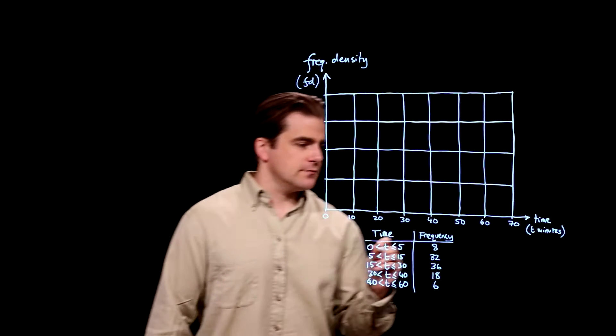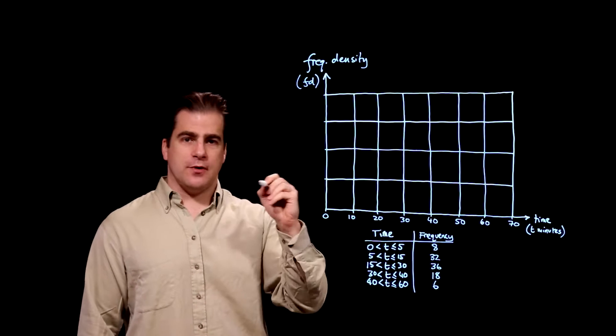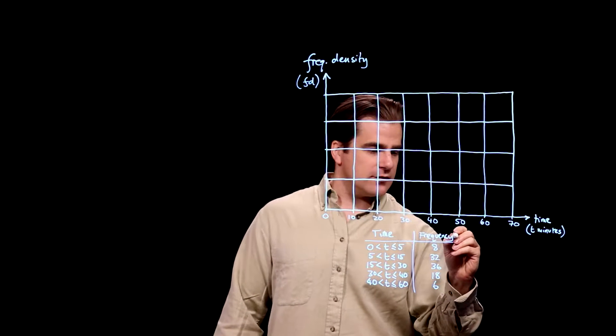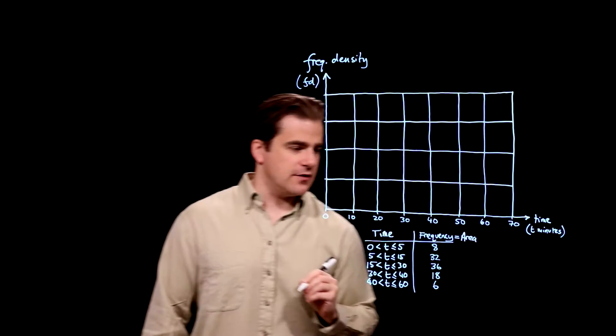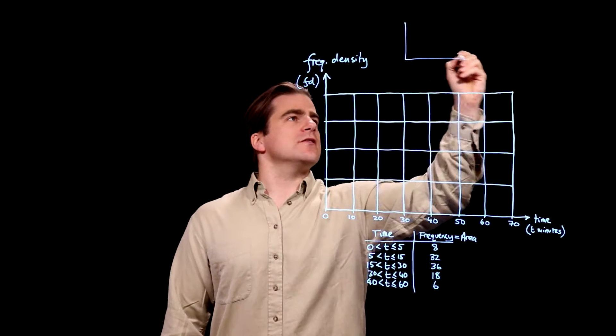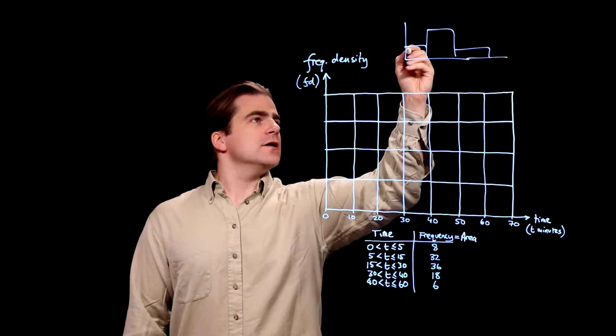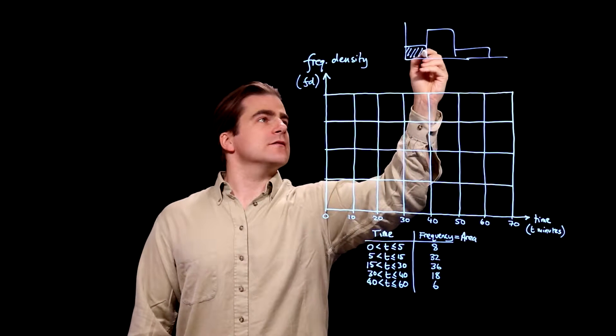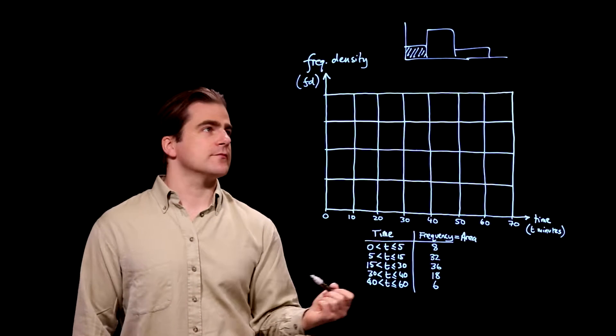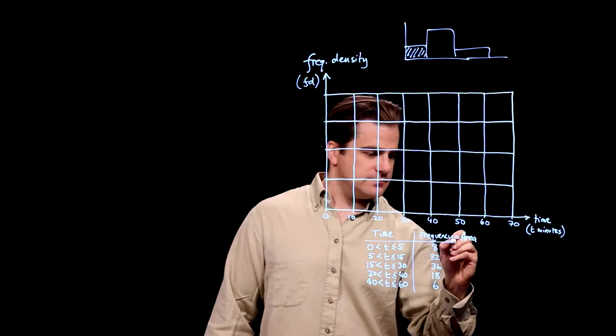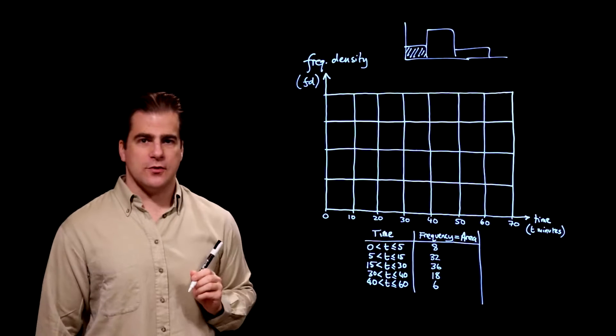Next, the frequency is the area of each box that we're going to plot. So write frequency equals area. What I mean is when we start plotting these box things, the area of each box has to equal this, the frequency. That's the next thing. Very important.